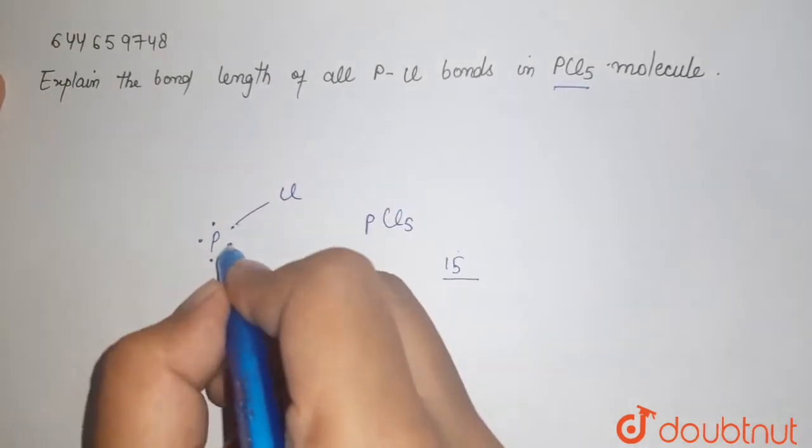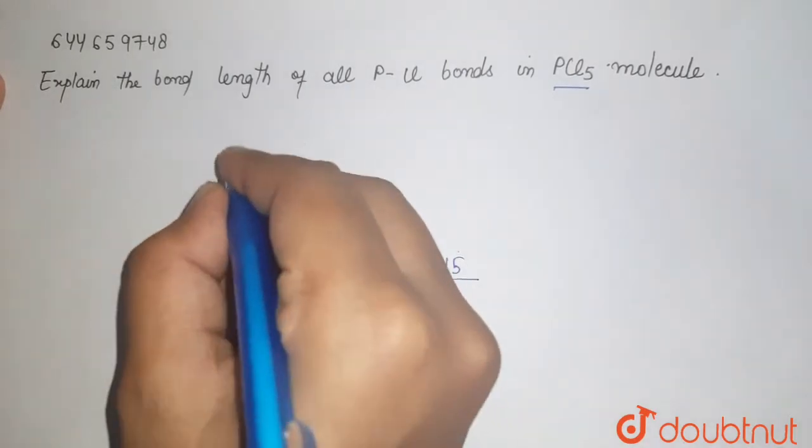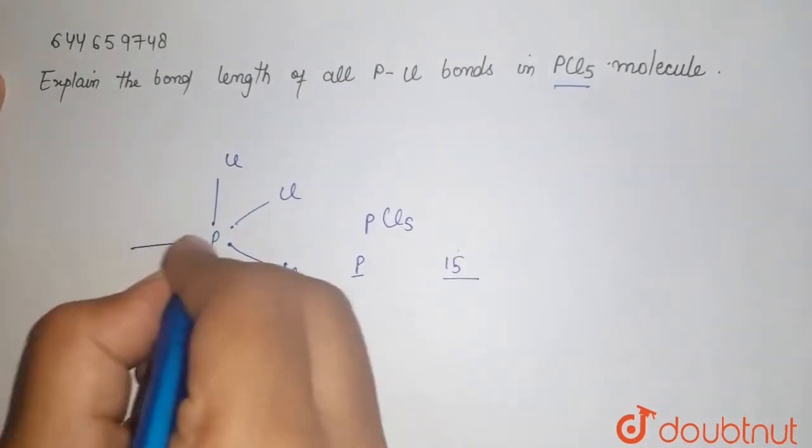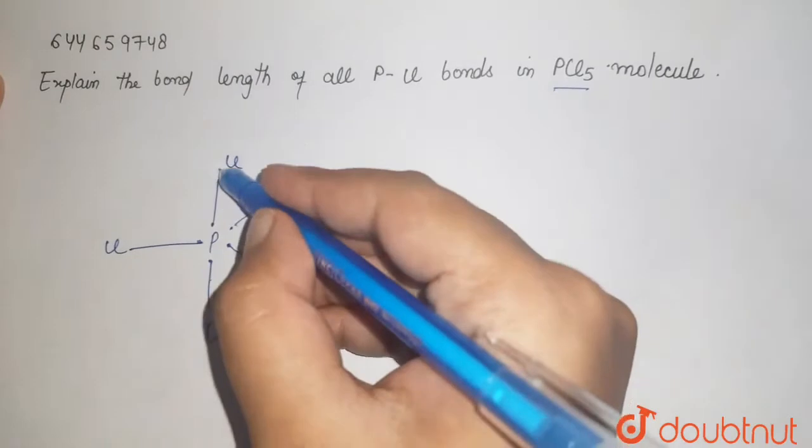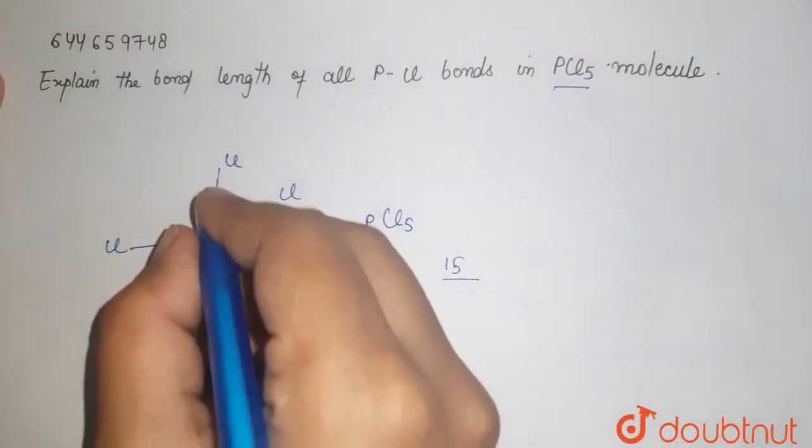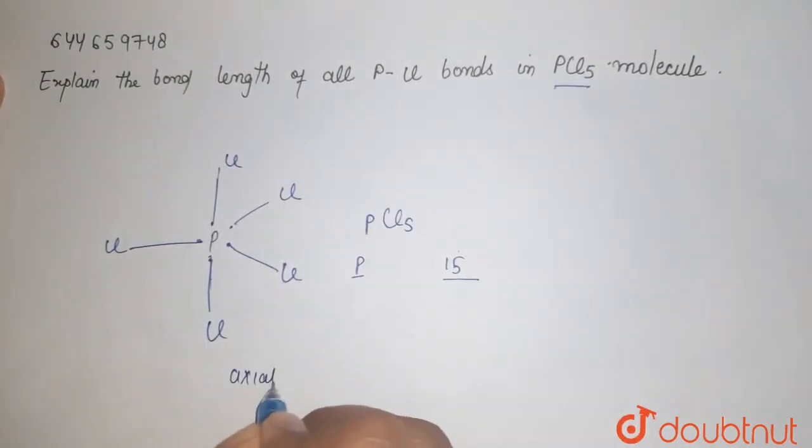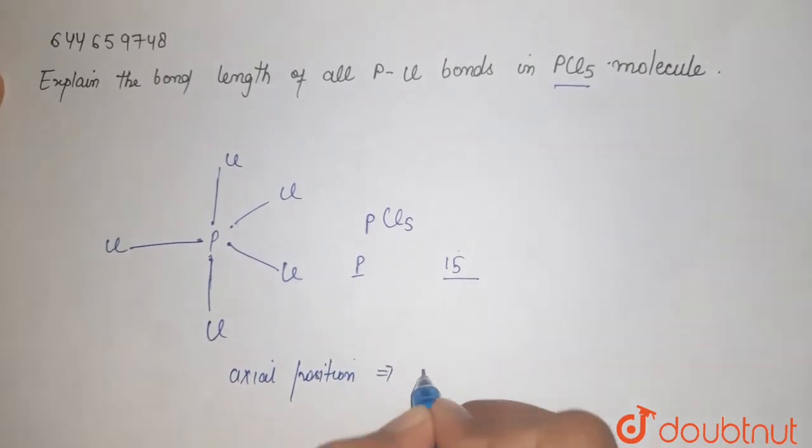If you see this position, this one is your axial position. Axial positions have longer bond length. If I talk about its bond length, it is 240 picometer.